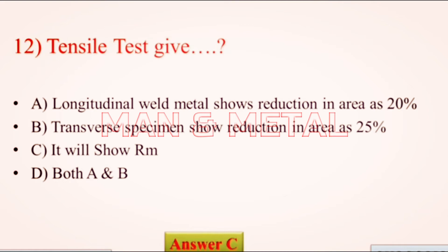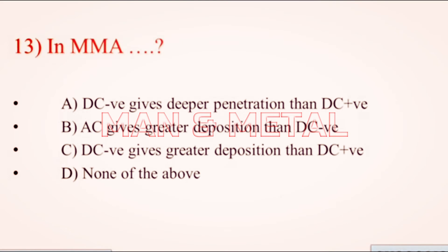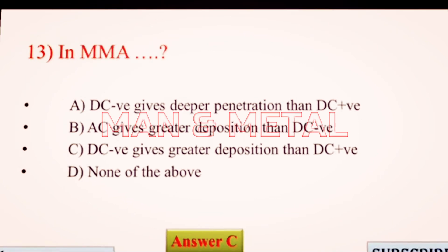Question 13: In MMA: a) DC negative gives deeper penetration than DC positive; b) AC gives greater deposition than DC negative; c) DC negative gives greater deposition than DC positive; d) none of the above.